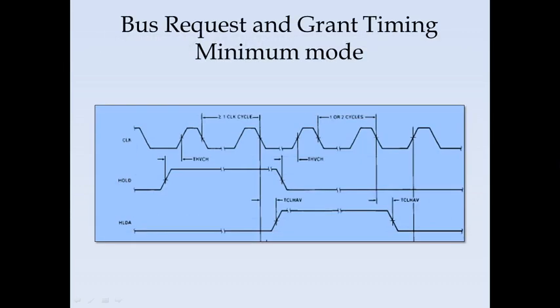For bus request and grant timing in minimum mode, the HOLD and HLDA (Hold Acknowledge) lines are used. In direct memory access, the DMA controller requests the address, data, and control bus. The HOLD signal is a request by another bus master to claim the bus. After receiving the request, the 8086 asserts HLDA, relinquishing control of the bus to the external bus master.